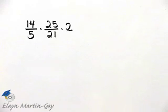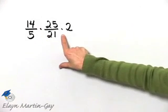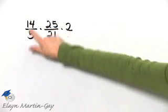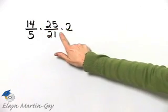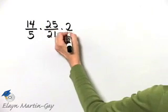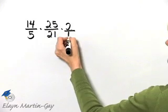Let's perform the indicated operation. We have multiplication and again multiplication. We've got a fraction times a fraction times a whole number. Let's go ahead and write that whole number as a fraction.